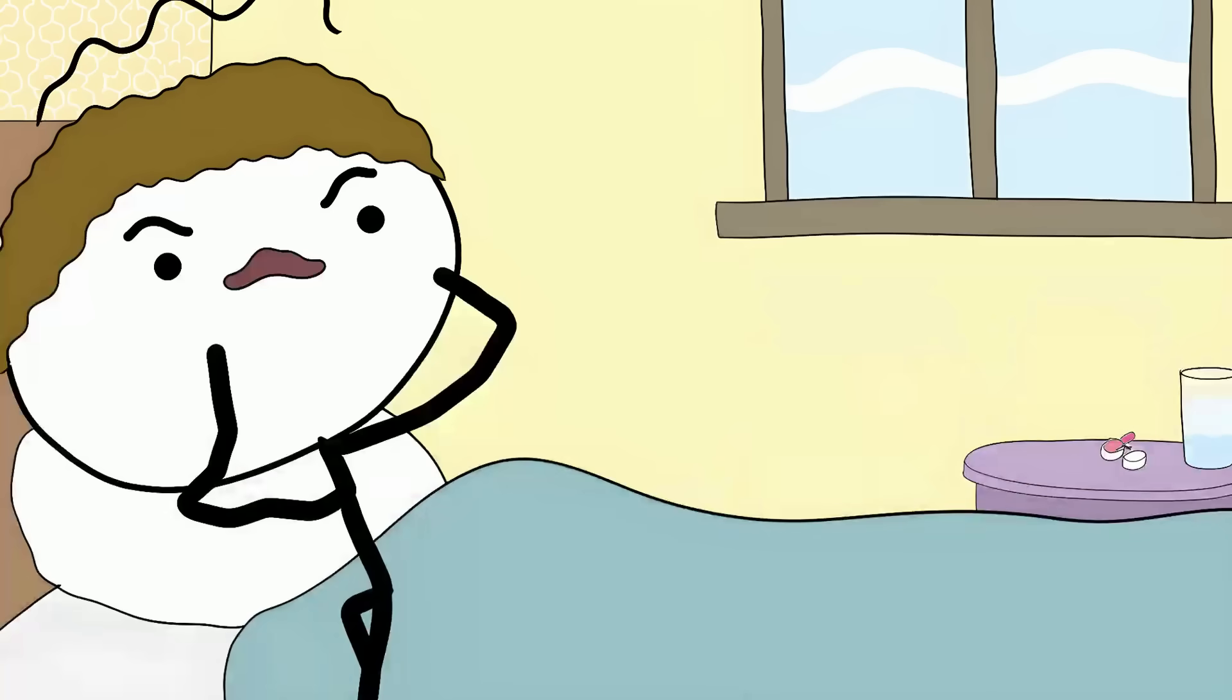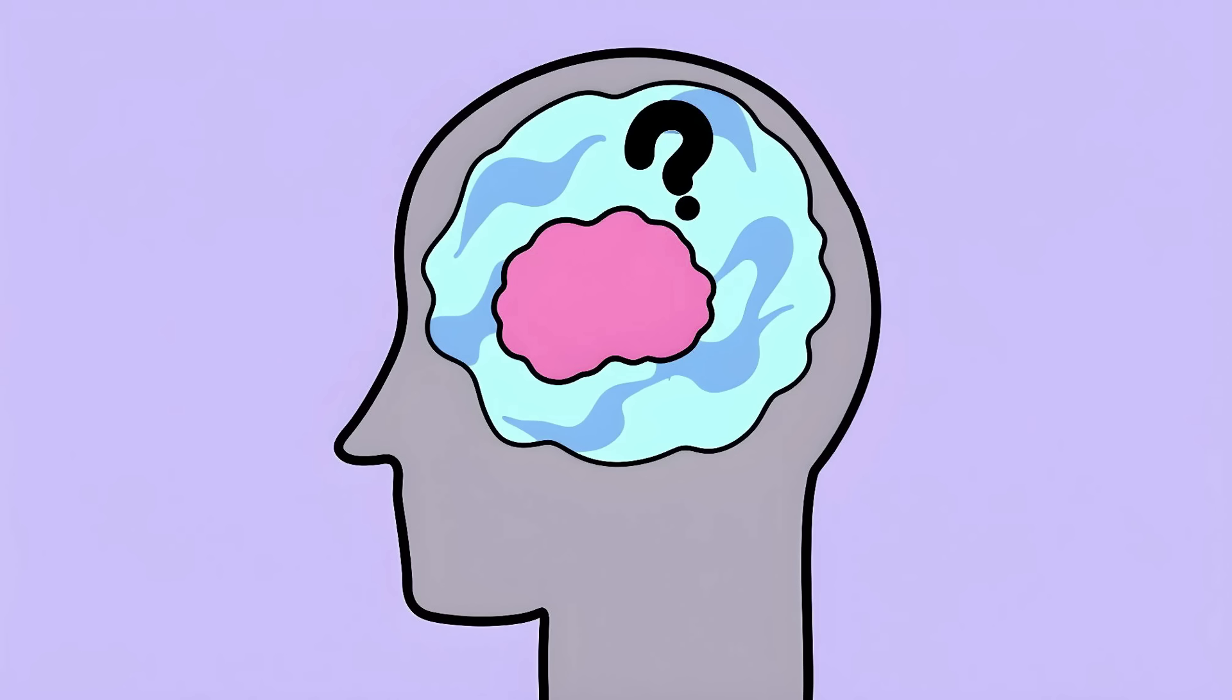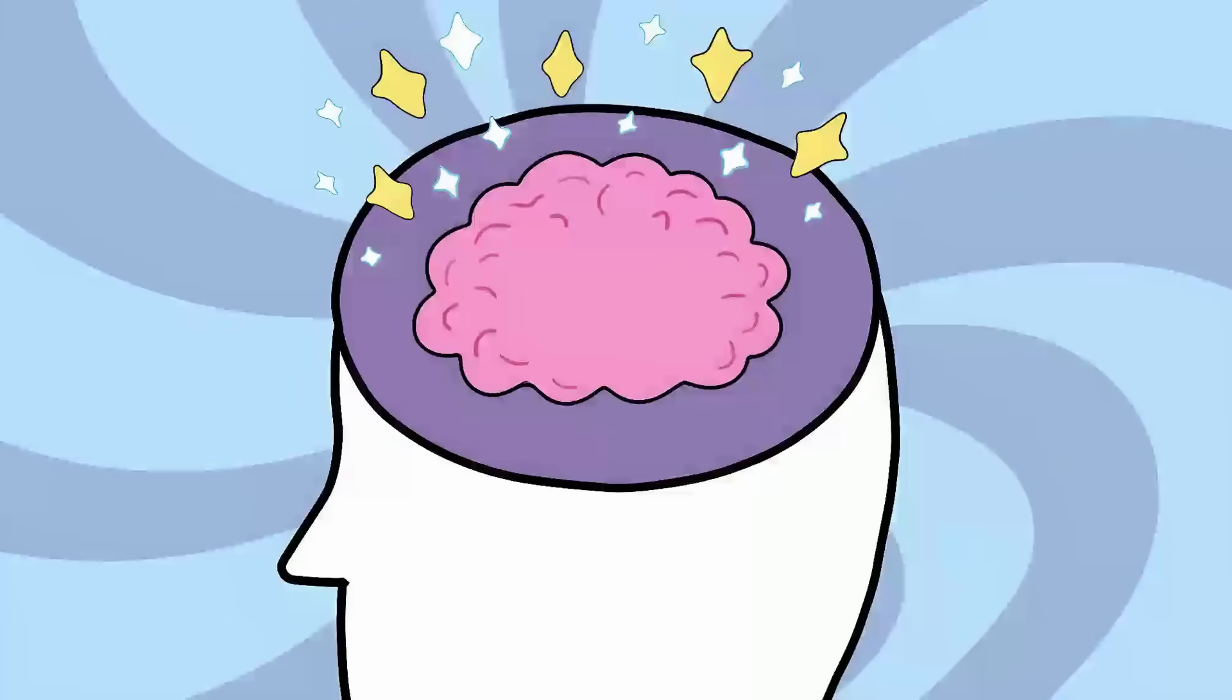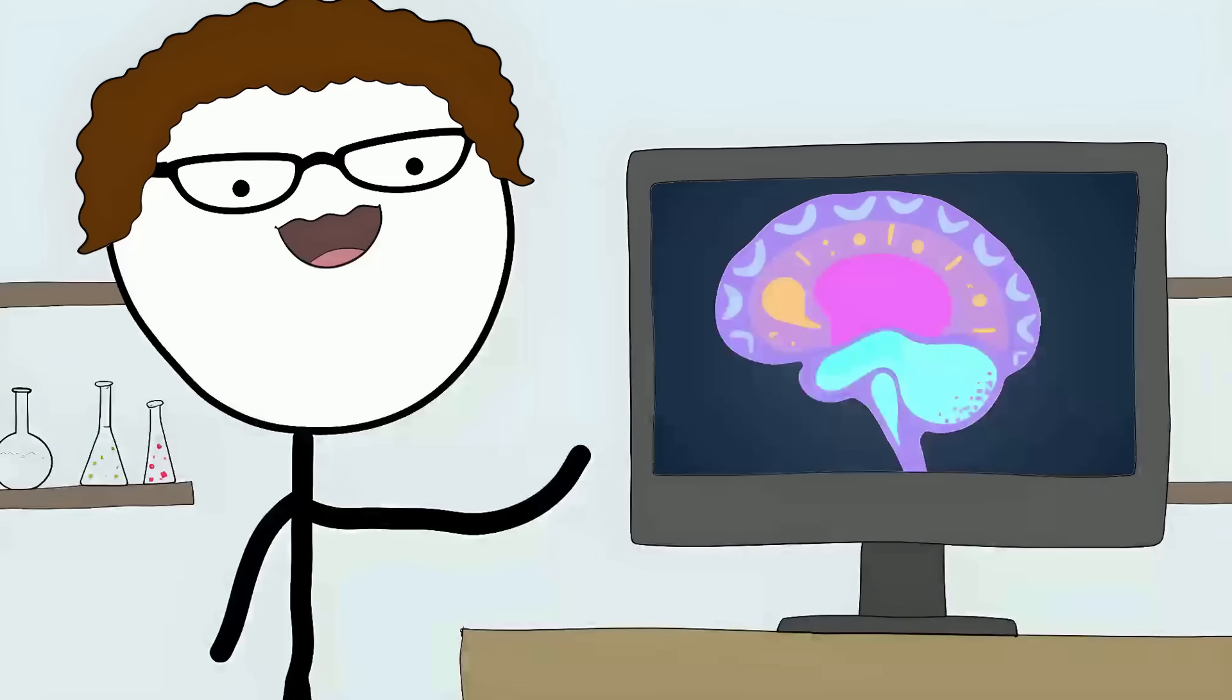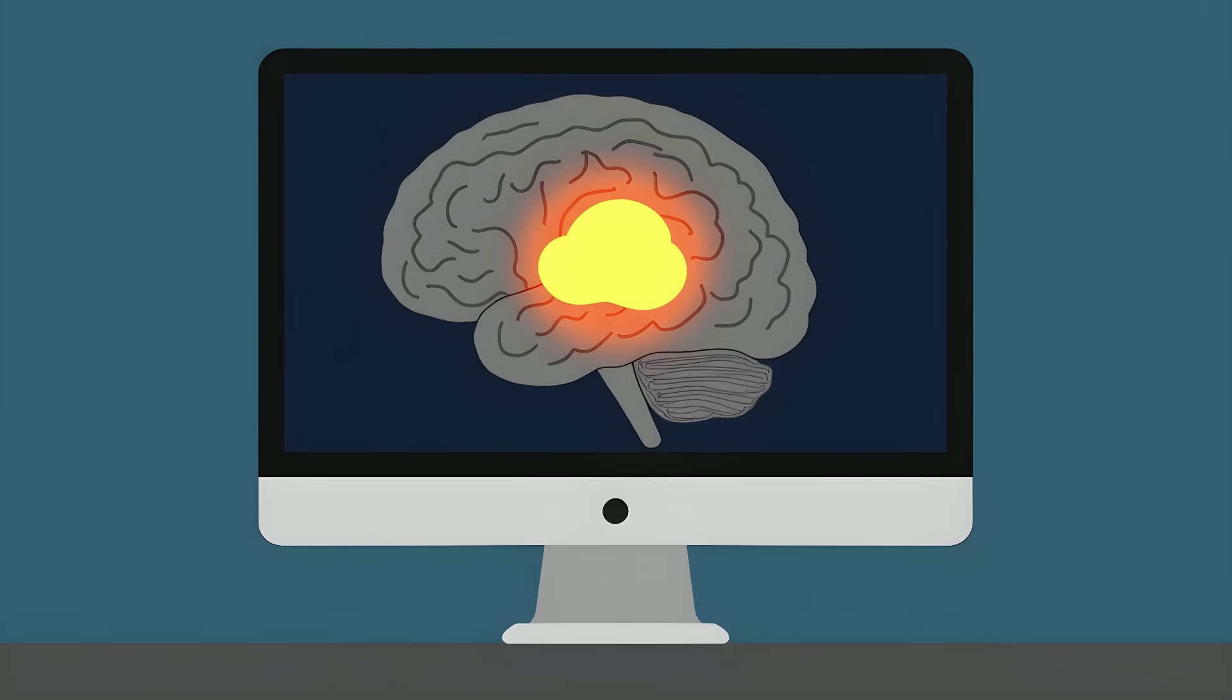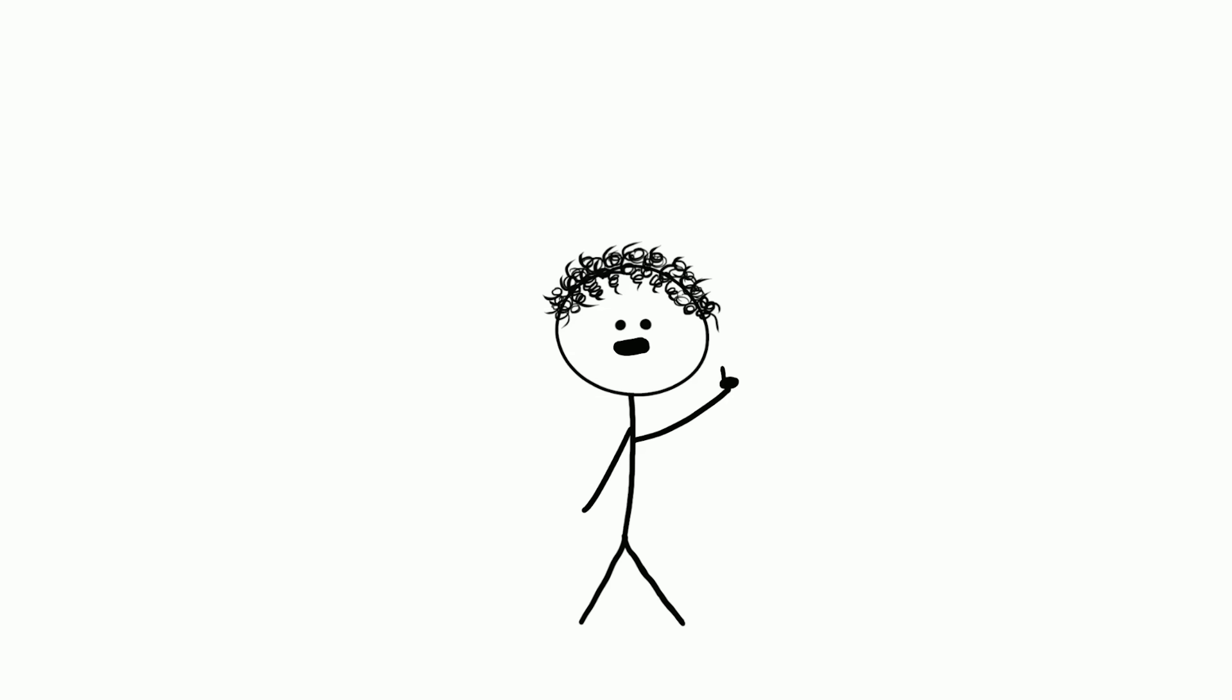Number 2: Placebo Power. Imagine taking a sugar pill for your headache and the pain actually goes away. That's the placebo effect. Your brain doesn't know it's fake. It starts producing its own natural painkillers just because you believed the pill would work. Scientists have actually seen this happen in brain scans. When people take placebos for pain, the parts of their brain that handle pain relief light up. Your brain is its own drug dealer, pumping out chemicals just because you tricked it. These natural painkillers are called endorphins.